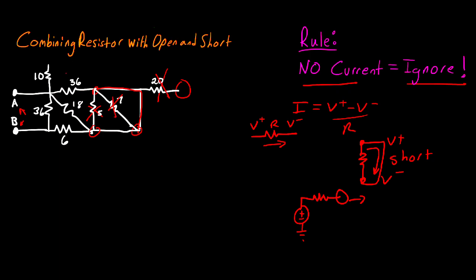The next thing I see is we have this 10-ohm resistor over on the left. And again, there's no place for the current to go, so there's no current that's going to be flowing through that resistor, and we can safely ignore it from our equivalent resistance.